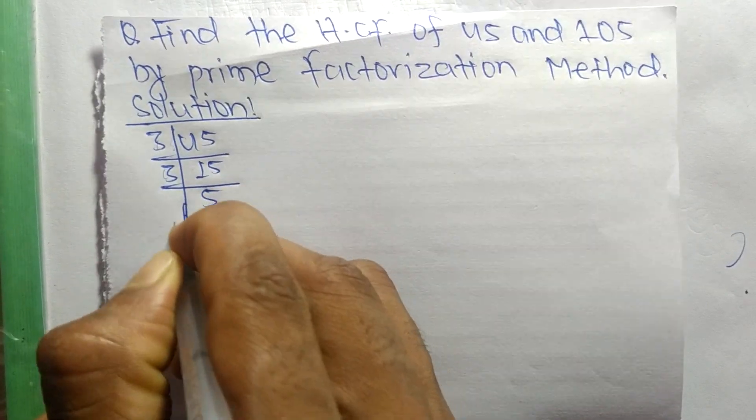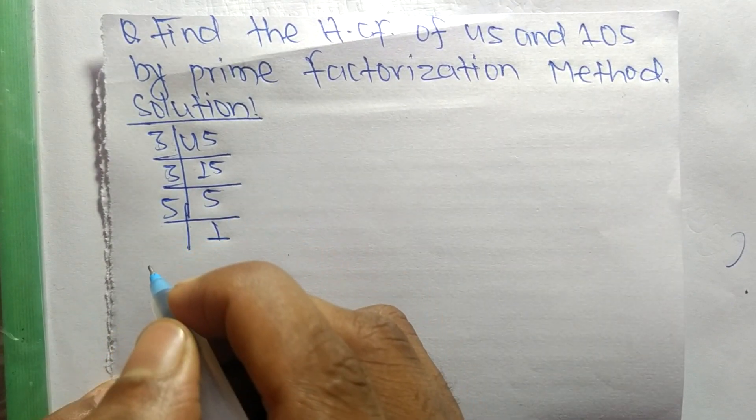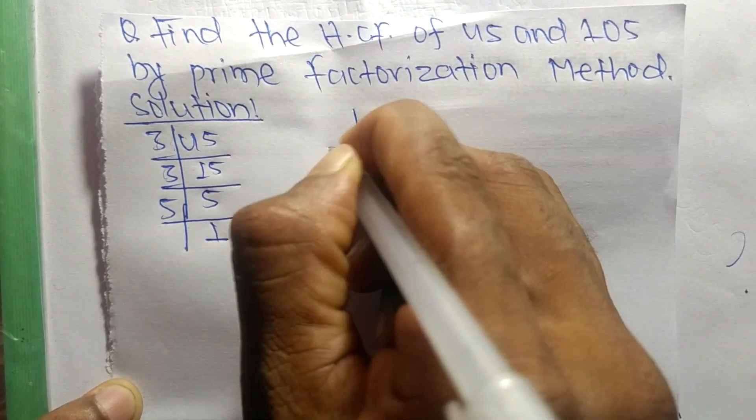Then 3 times 5 equals 15, and 5 times 1 equals 5. Similarly, the prime factors of 105 are: